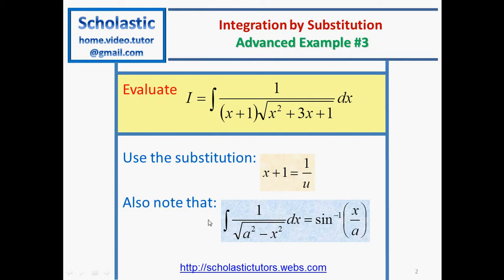There is also an expression given: the integral of 1 over the square root of a squared minus x squared gives inverse sine of x over a. We need to find out how to utilize this. In this case we can't see directly what the purpose of this expression is, but we'll start with the substitution x plus 1 equal to 1 over u.